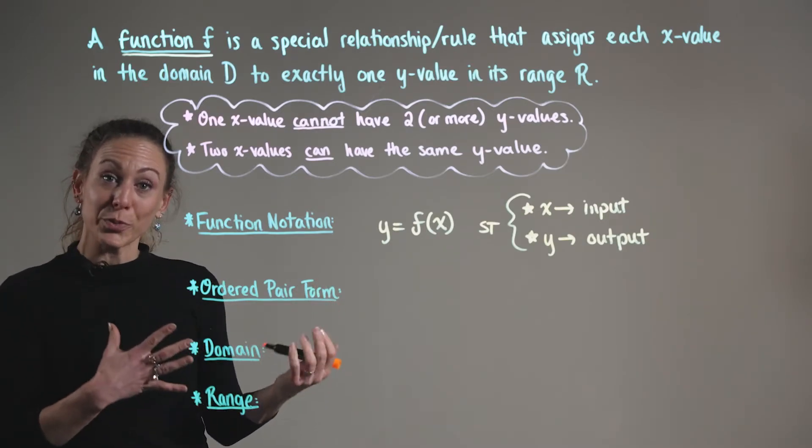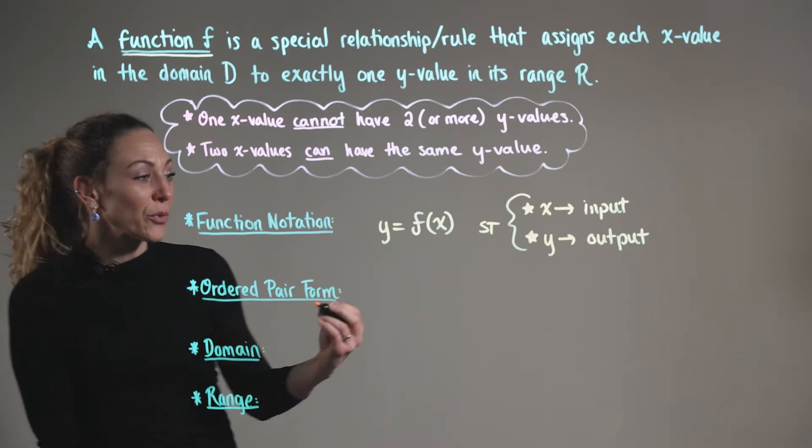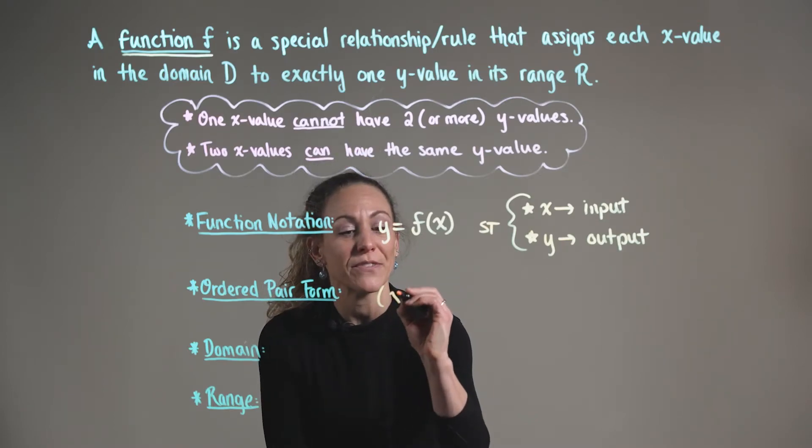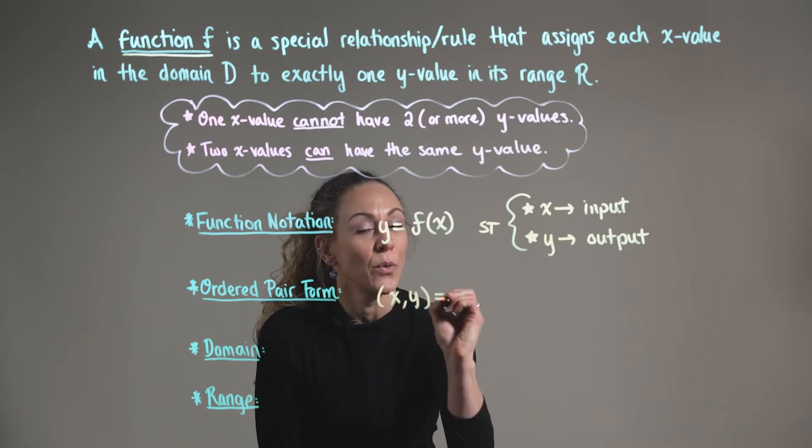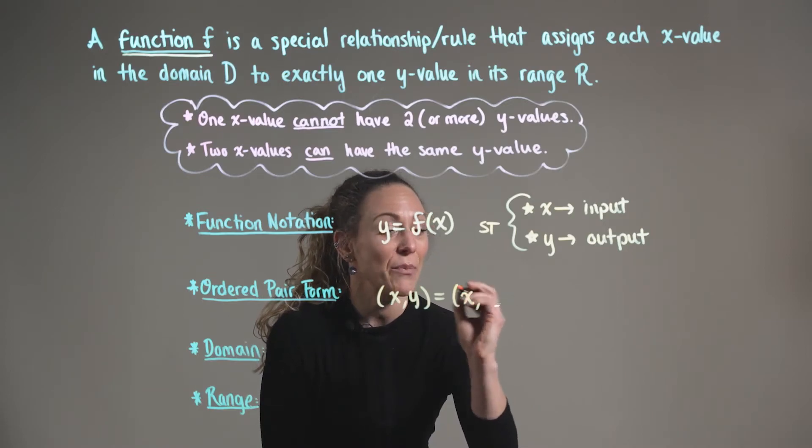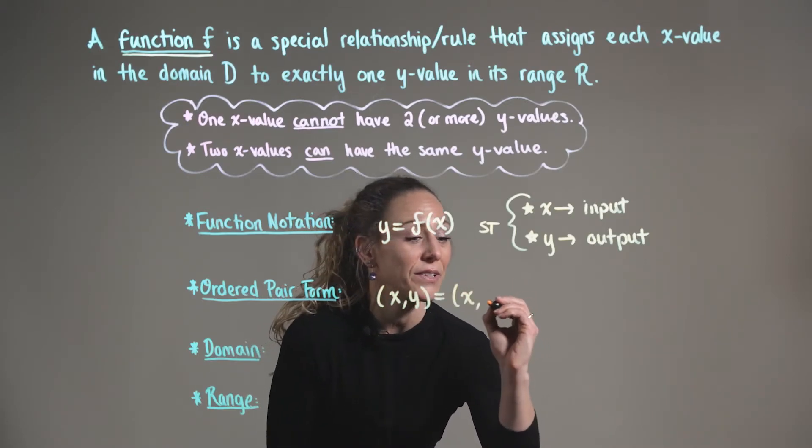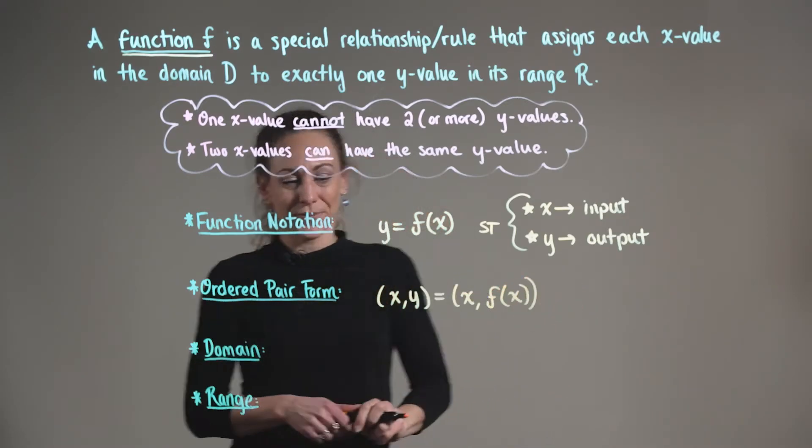With this function notation, we can clearly see the corresponding ordered pair form. In ordered pair form, we say that a function can be defined as (x, y), where x, our input, remains the same and we can rewrite y in its equivalent function form.